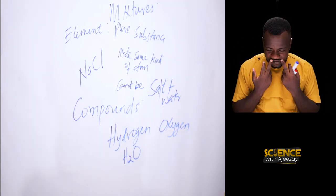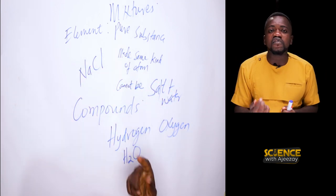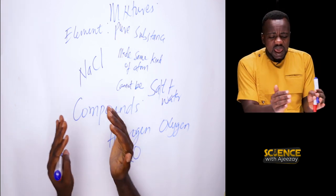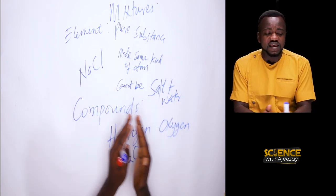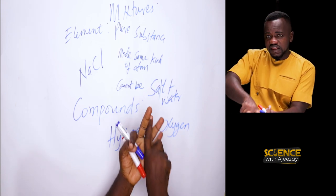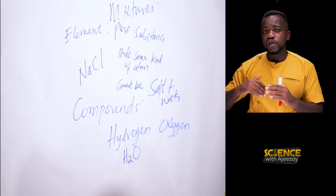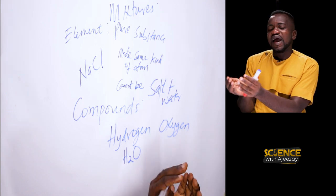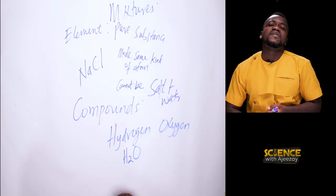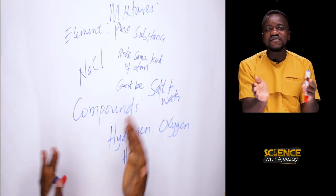By just looking at salt and water mixed, you can see they have mixed completely, but when you taste it you can still feel the salt and the water separately. The product still retains the individual character of its constituents. That is the difference between a compound and a mixture. For a mixture, you can still feel the individual substances that came together. But for a compound, the product is different from the individual elements that came together.